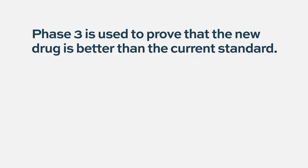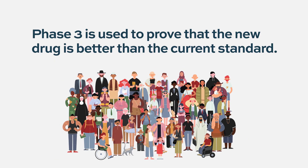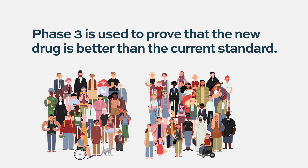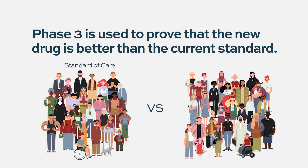If the drug looks promising at the end of phase two, you typically move to phase three, where you prove it's better than the current standard. In phase three, you'll typically use that phase two dose. In myeloma, often a few hundred patients are enrolled — half get the standard of care and half get the new treatment — and you follow that for years to see if the new treatment is better and safer. That's how drugs get FDA approval.